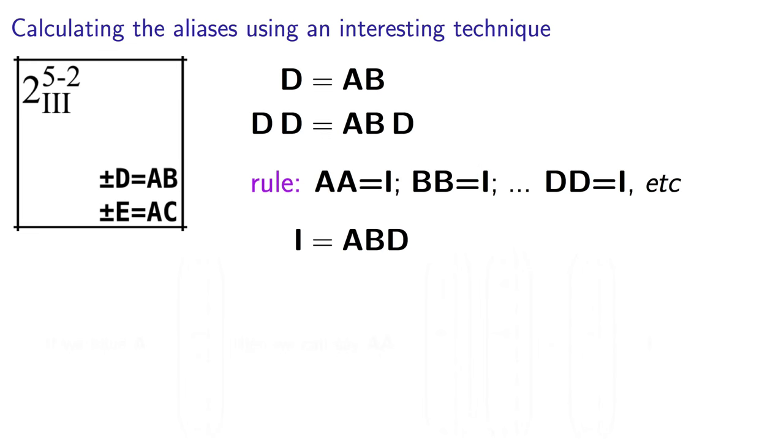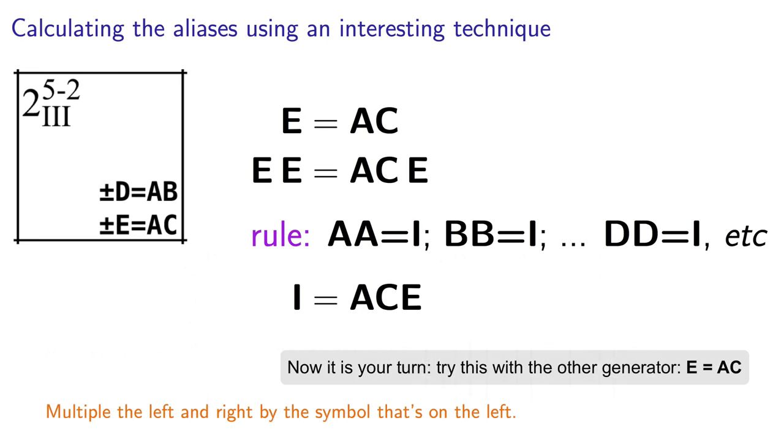OK, so we have taken our generator and slightly transformed it so that it has an identity, I, on the left, and the rest of the generator on the right. That's right.